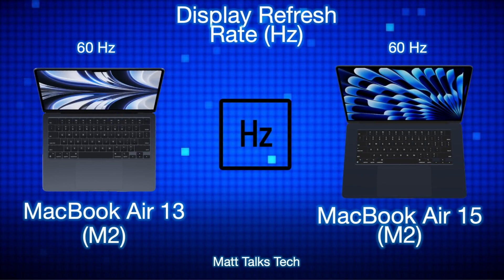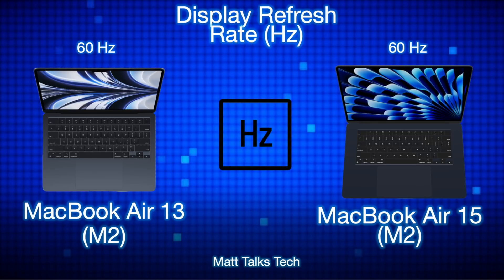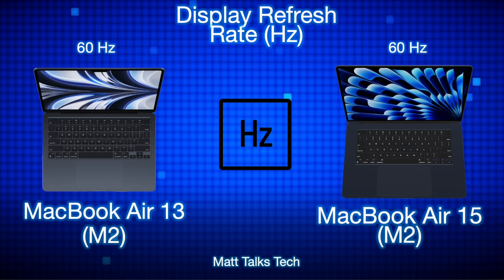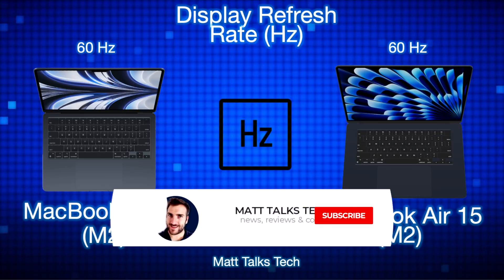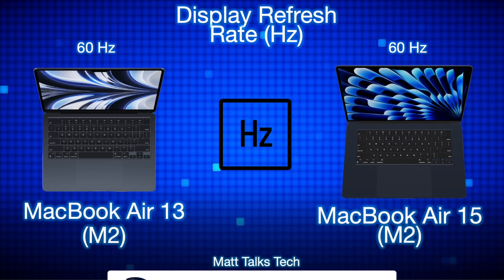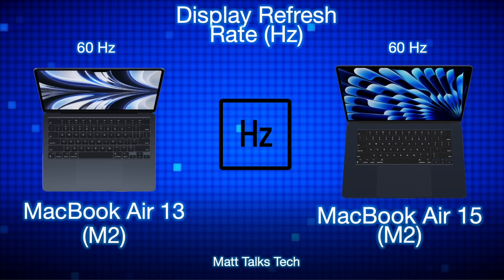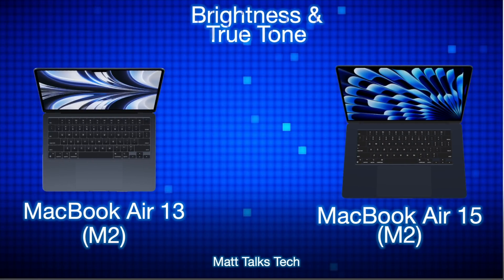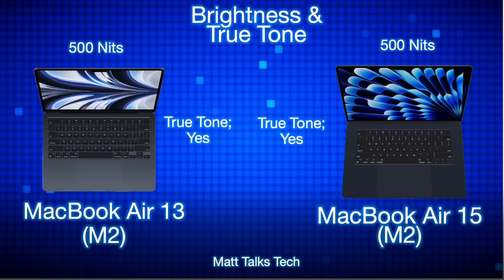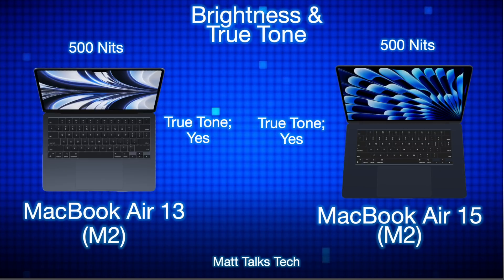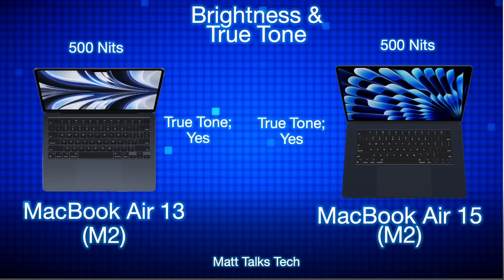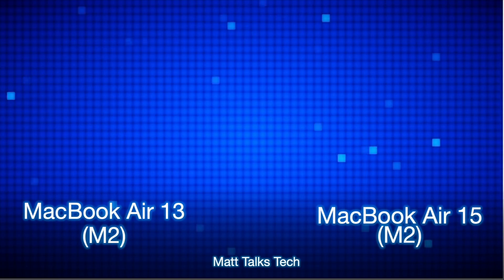The display refresh rate is exactly the same on both MacBooks — 60Hz. There is no 120Hz ProMotion here; that's reserved for the Pro models, just like with iPhones. Moving on to brightness and True Tone, both displays have 500 nits of brightness, which is really good for most users. MacBook Pros do have a higher nit count, but both of these MacBook Airs also feature True Tone.